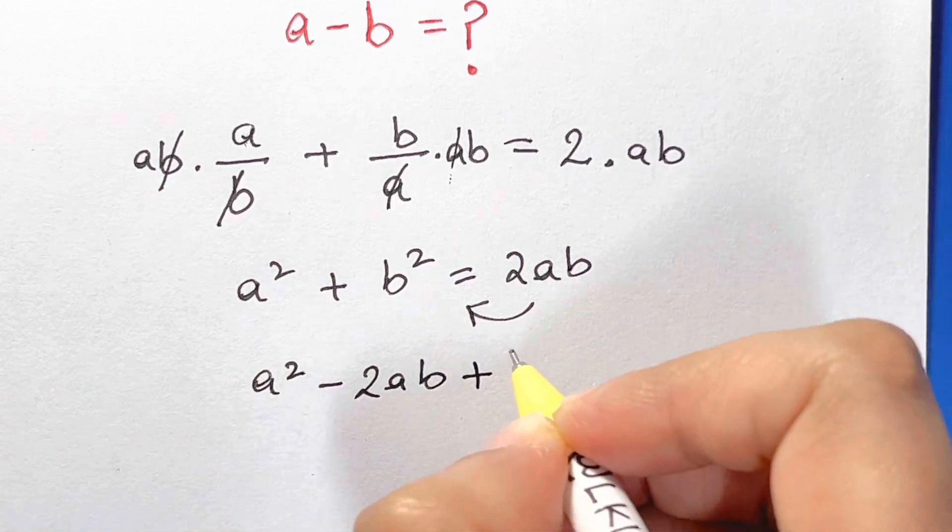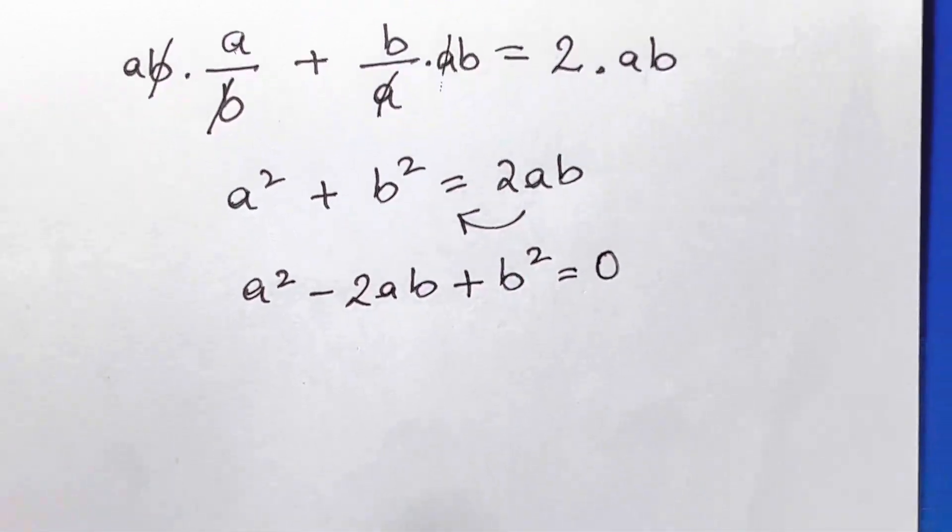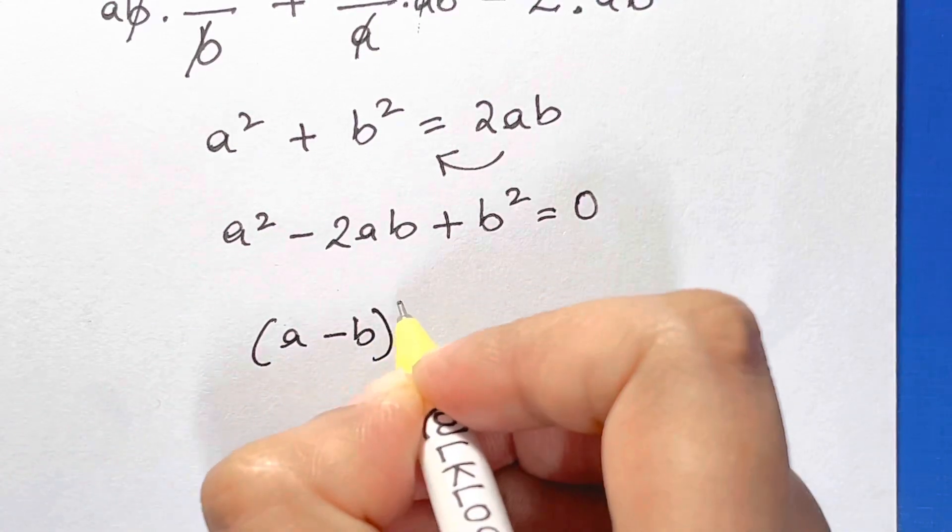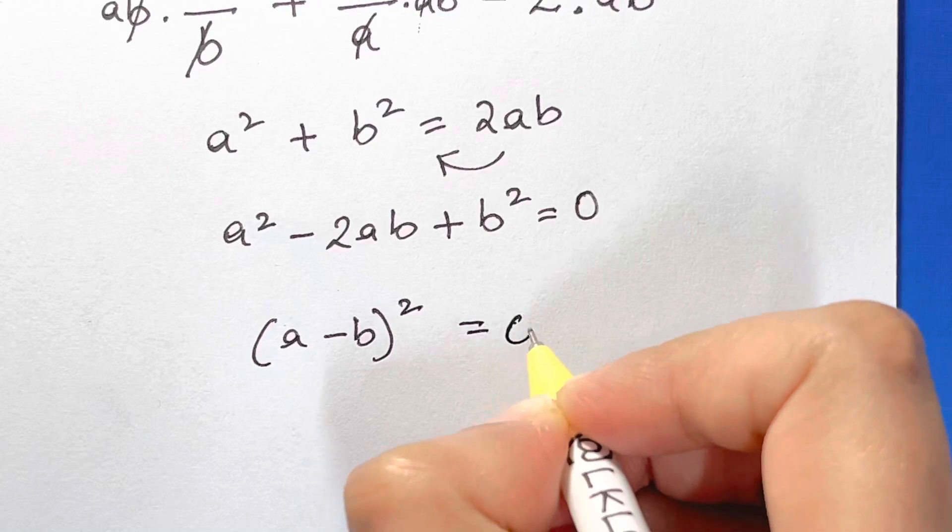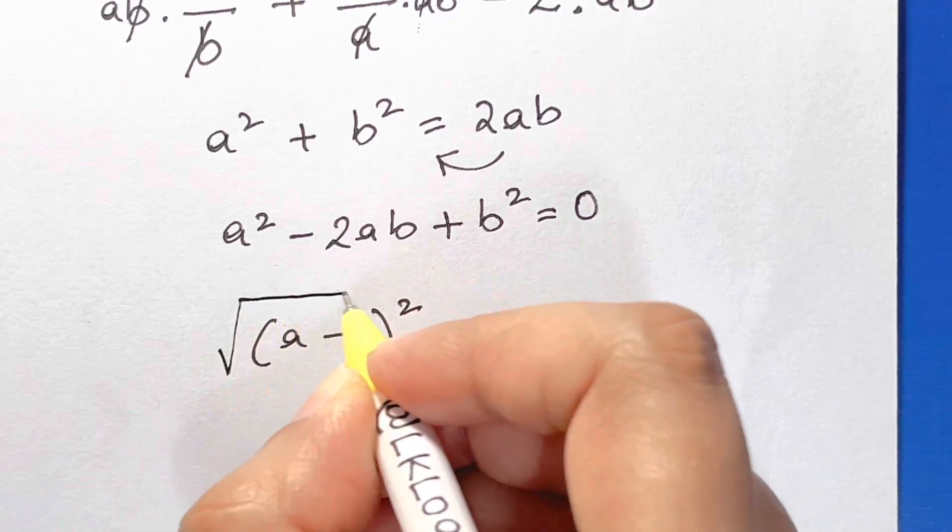And what's this? This is an identity which is a minus b the whole square is equal to 0. Now if I want to remove the square, let me put the square root.